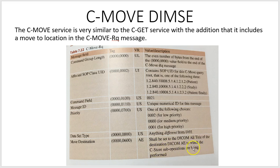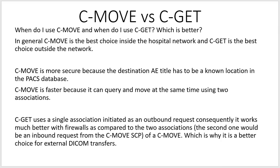When do you use C-MOVE and when do you use C-GET? In general, C-MOVE is the best choice inside the hospital network, and C-GET is the best choice outside the network. C-MOVE is more secure because the destination AE title has to be a known location in the PACS database — it will only send to workstations and modalities it knows. C-MOVE is also faster because it can query and move at the same time using two associations.